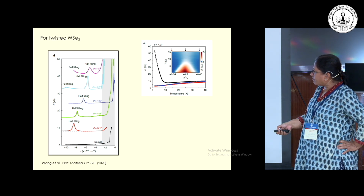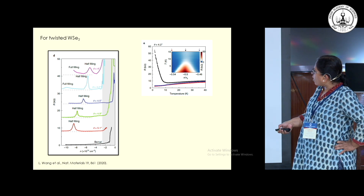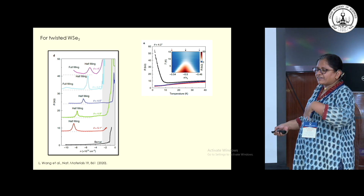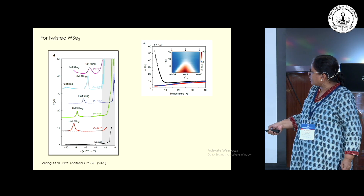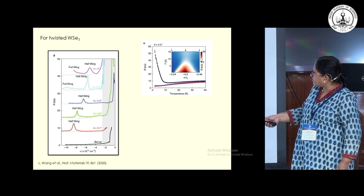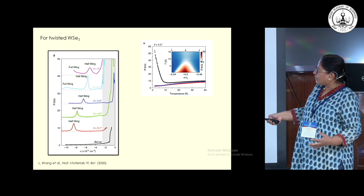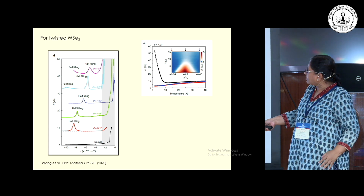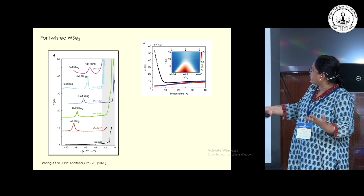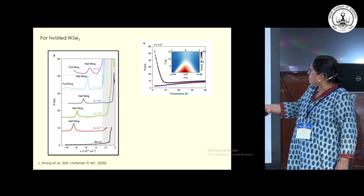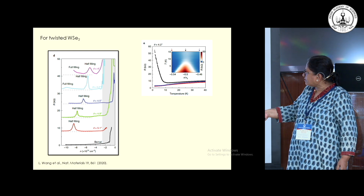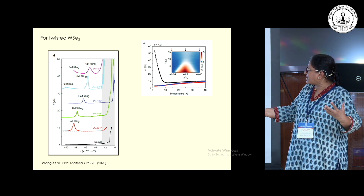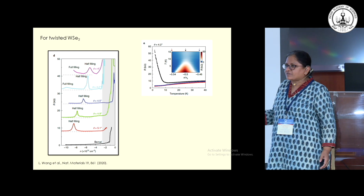Going back to another set of experiments from Abhay Pashupati's group — this is the picture based on which the phase diagram I showed earlier was constructed. If you have the natural-occurring bilayer, you have semiconducting behavior. Shown here is resistivity as a function of hole concentration. When the Fermi level is in the gap, you have semiconducting behavior; as you dope carriers into the valence band, you get metallic behavior. However, at different twist angles from 5.1 down to 4 degrees, you see an insulating peak — a transition back from metallic to semiconducting — which raises the question: why do these materials show such unusual behavior?